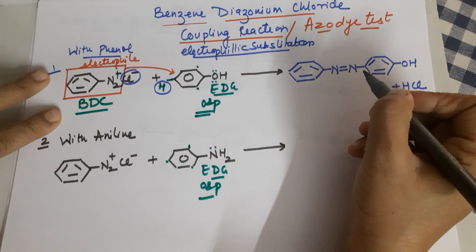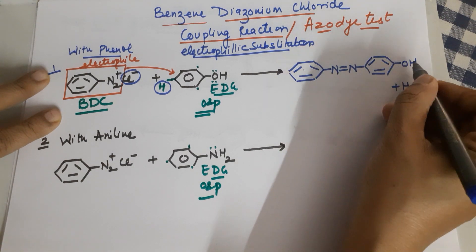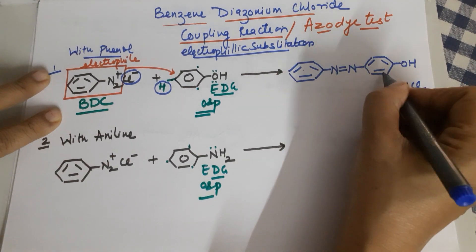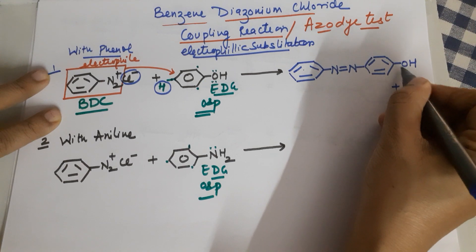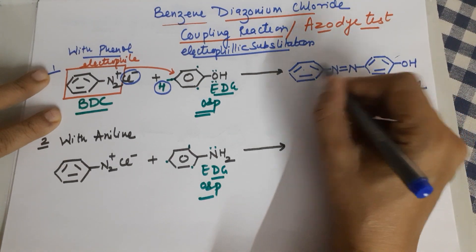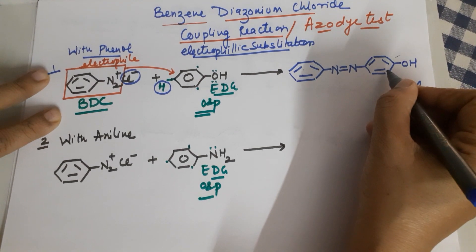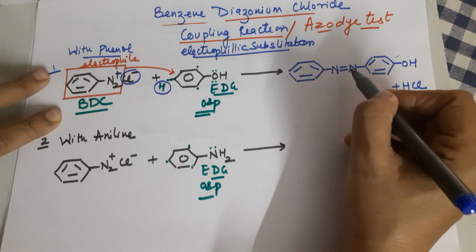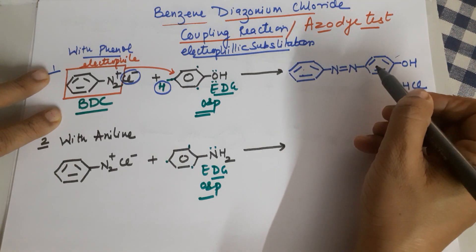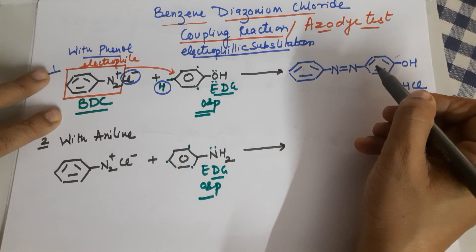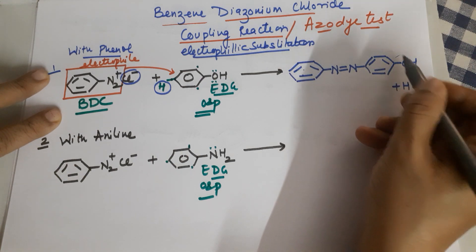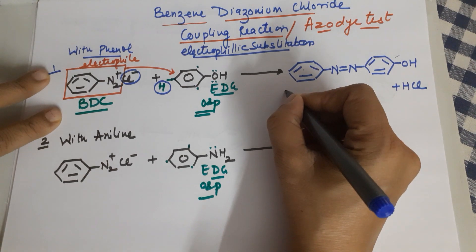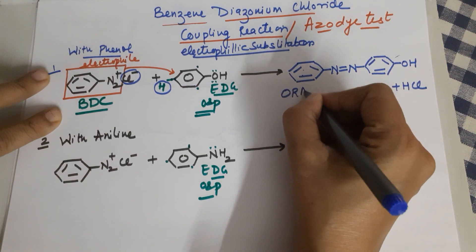The byproduct is going to be HCl. This particular compound is called para-hydroxyazobenzene. It has two benzene rings because the azo group has to bind to two sides; otherwise its valency will not be satisfied. For your information, this is an orange colored dye.